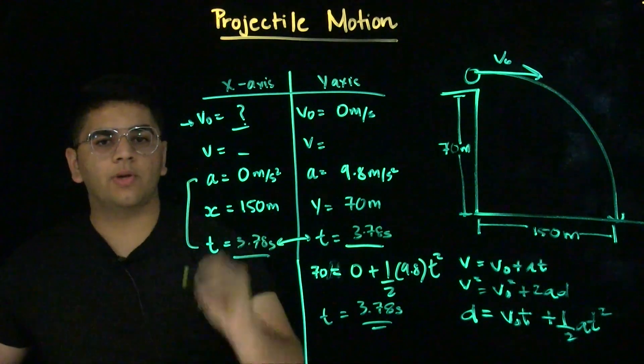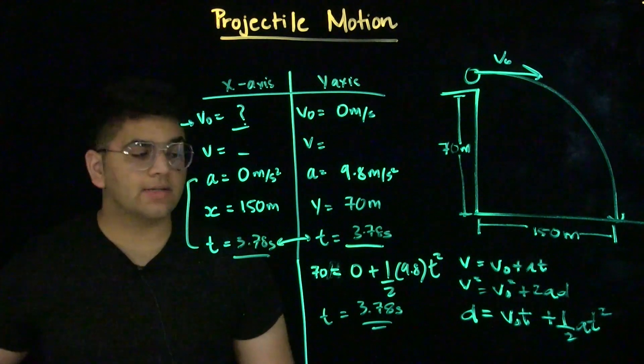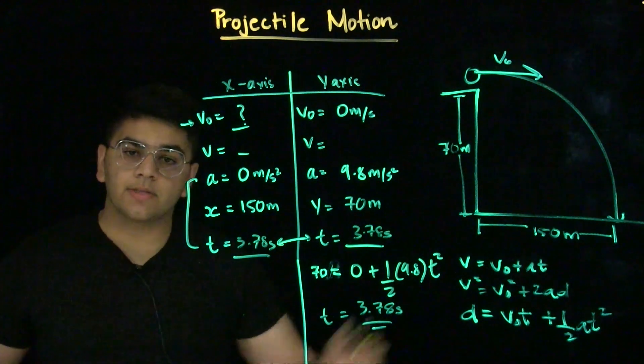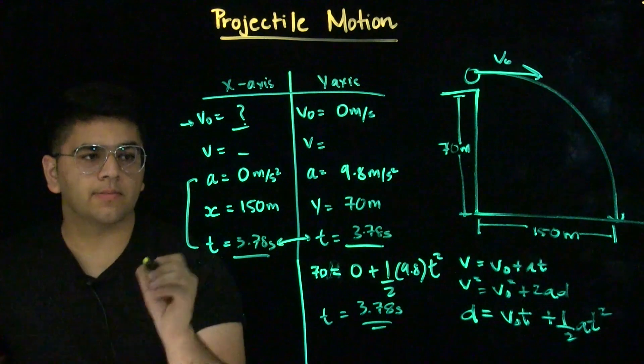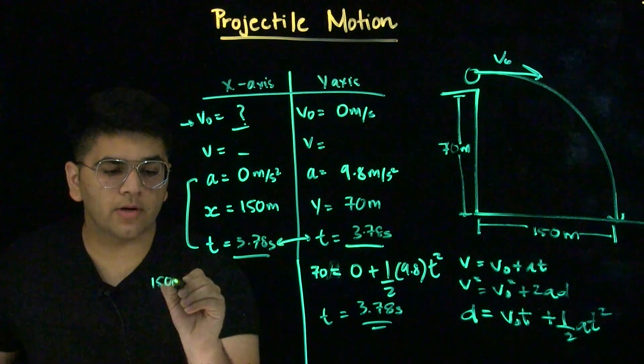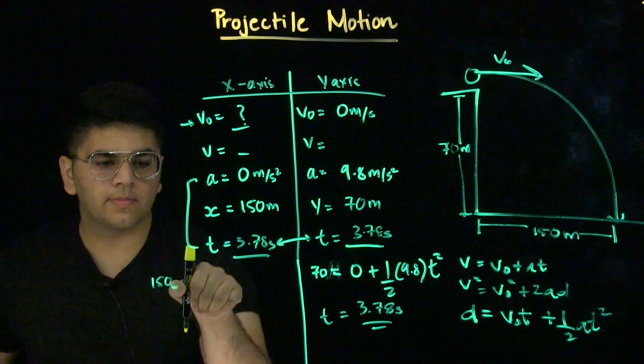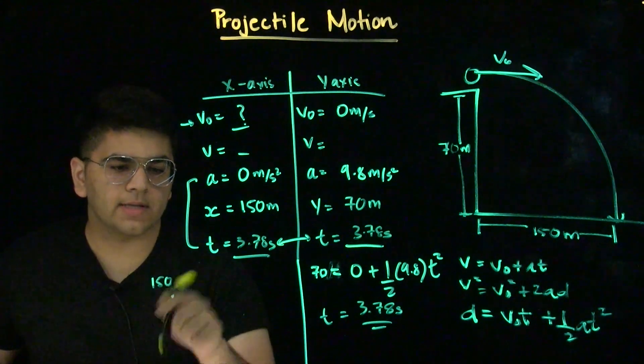Now that we have our three known variables, we can solve for our initial velocity. We will again use the same third kinematic equation to solve for our initial velocity.